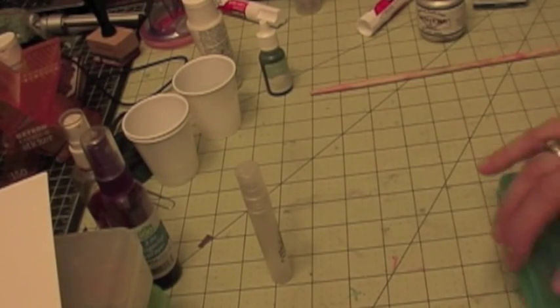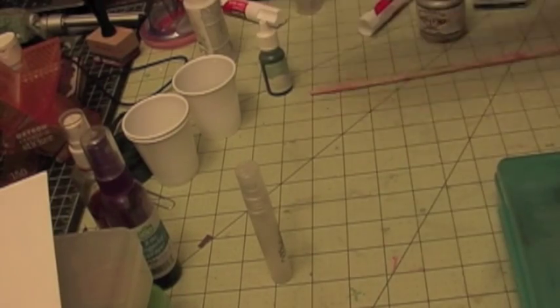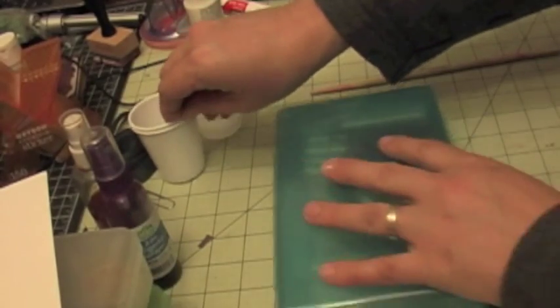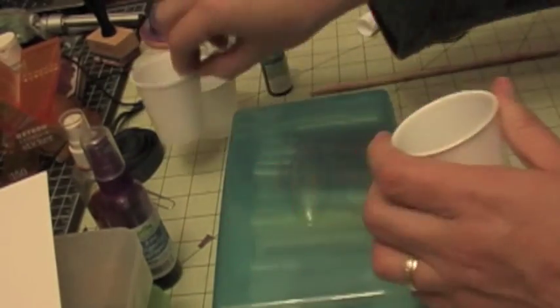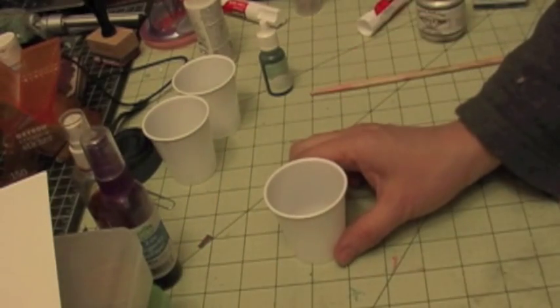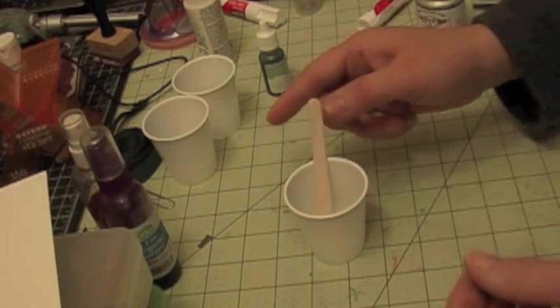So for the white I usually just use a little bit of acrylic paint for my white. I'm going to go ahead and get one of these cups. And I like to take a popsicle stick.